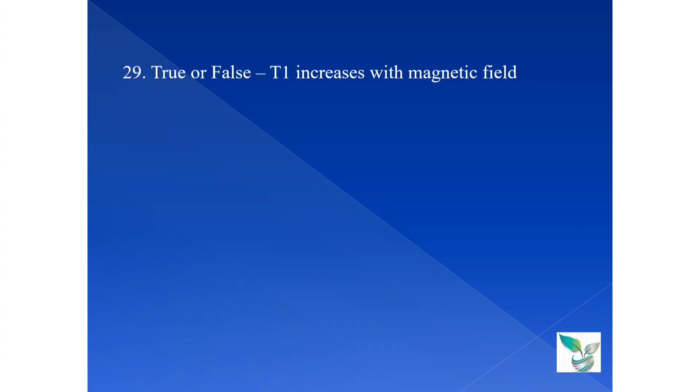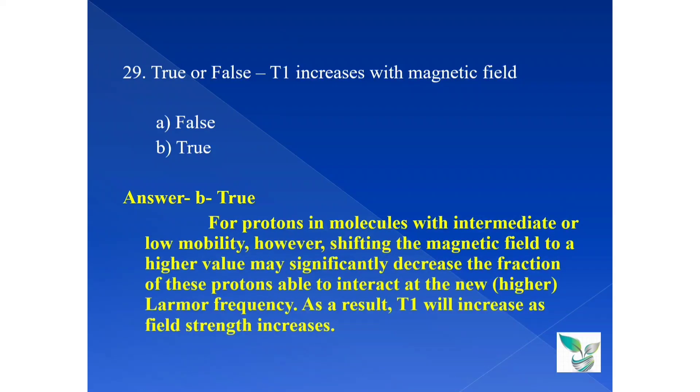Moving on to the next question, question number 29. Describe whether it is true or false. That is, T1 increases with magnetic field. Option A, false. And option B, true. So, the answer is option B, true. That is, T1 increases with magnetic field for protons in molecules with intermediate or low mobility. However, shifting the magnetic field to a higher value may significantly decrease the fraction of these protons able to interact at a new or higher Larmor frequency. As a result, T1 will increase as field strength increases.